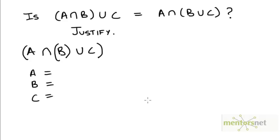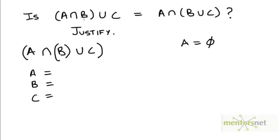Now how do we come up with a counterexample? Let's try some simple strategies. One simple strategy is to make one of these sets equal to the empty set. Let's say A is the empty set φ. A intersection B would then become φ, because the empty set intersected with any other set is the empty set. When we take the union of that with C, we would be left with C on the left-hand side.